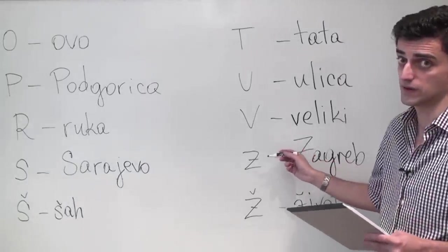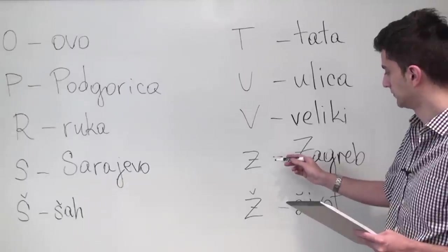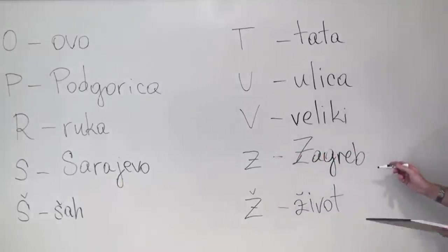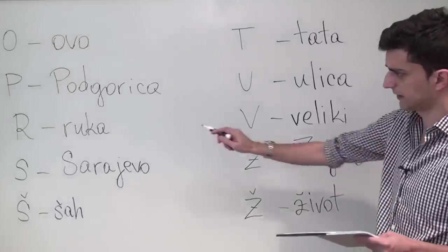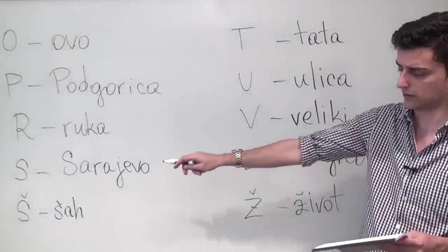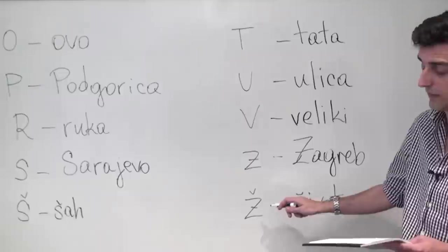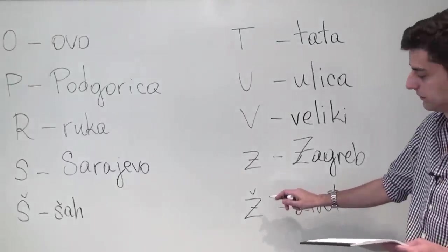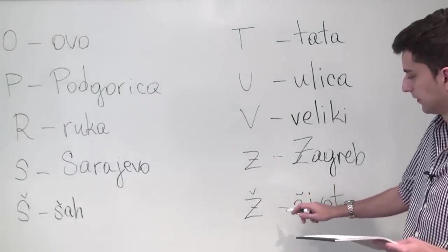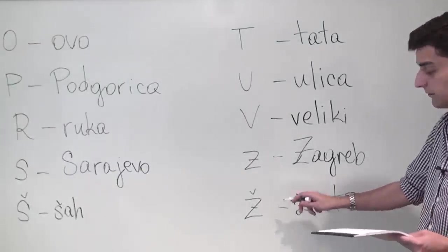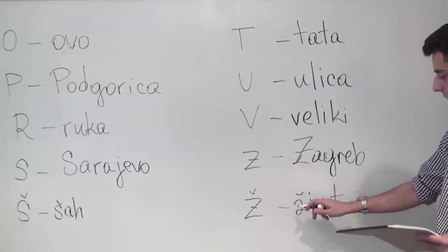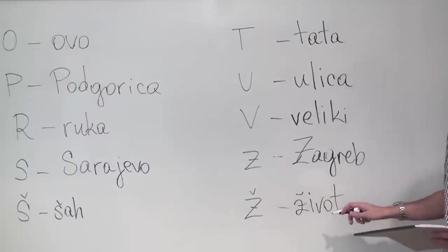Letter Z is pronounced Z, as in Zagreb, the capital of Croatia. And then just like S has Š, Z has its own pair, Ž with a caron which is pronounced as Ž, like I said, and can be heard in the word život meaning life.